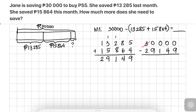The 3 ten-thousands becomes 2 ten-thousands. The 1 ten-thousand becomes 10 thousands. From the 10 thousands, we take 1 thousand to make 10 hundreds. From the 10 hundreds, we take 1 hundred to make 10 tens. From the 10 tens, we take 1 ten to make 10 ones. Now we can subtract.